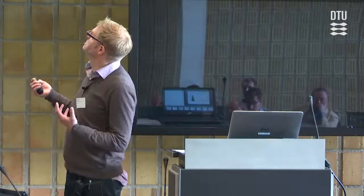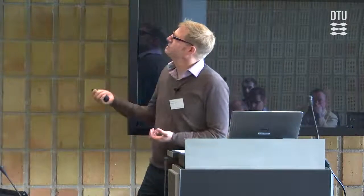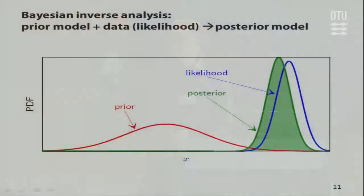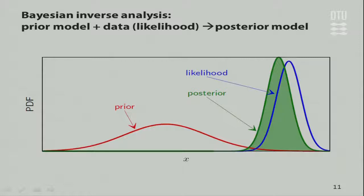In a Bayesian context, we start with a prior model — which may be highly uncertain — and a likelihood function that represents our information. A measurement error can look like a likelihood function. Combining prior and likelihood gives the posterior distribution, shown in green in this figure. The posterior combines what we knew before with what we have measured, and typically reduces uncertainty — the posterior is slightly narrower than both the likelihood and prior distributions.